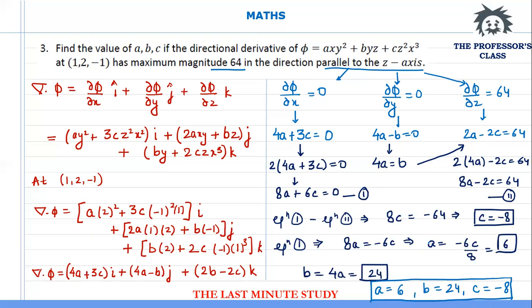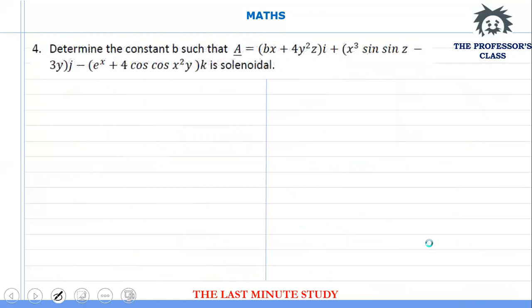Let us move on to question number 4. Here we are supposed to determine the constant b such that the given function A is solenoidal. We need to understand what a solenoidal function is — a solenoidal function is one whose divergence is equal to 0. If I set the divergence of the function equal to 0, I can obtain the value of b.